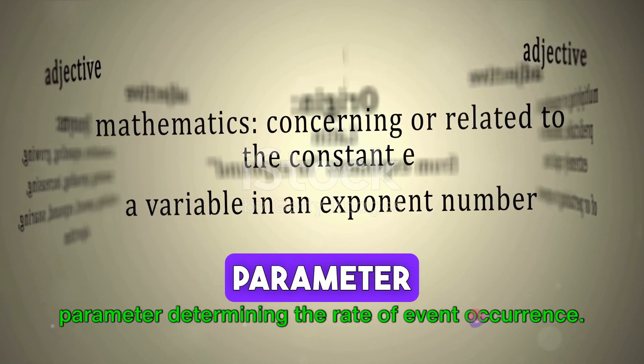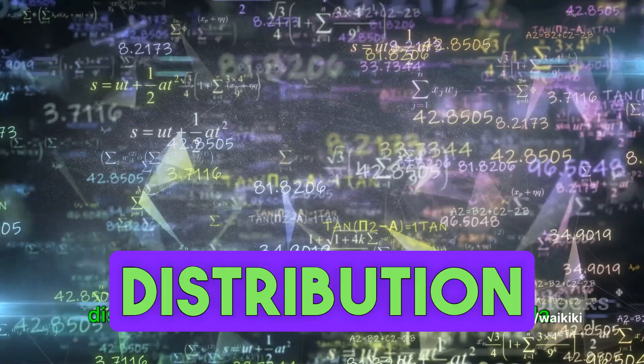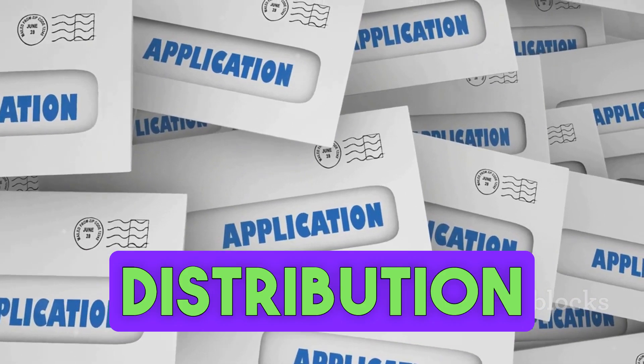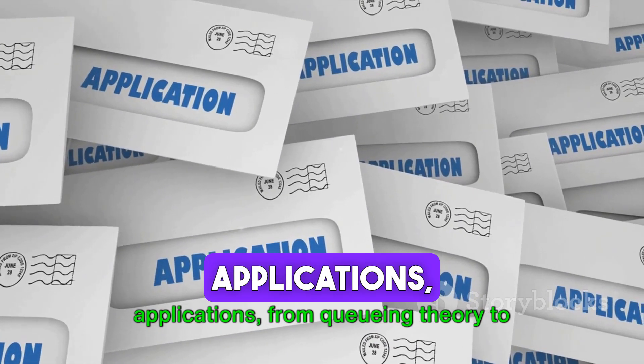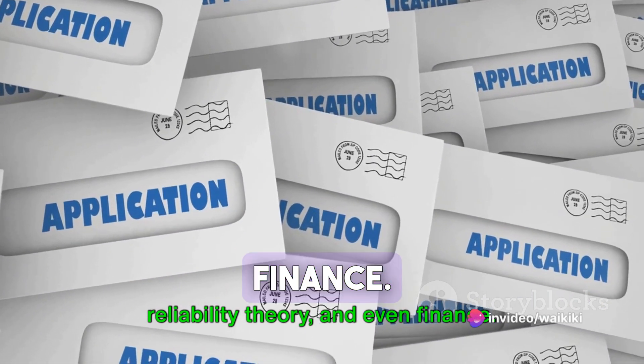The mean and variance of this distribution are both equal to 1 over lambda. This distribution has many practical applications, from queuing theory, to reliability theory, and even finance.